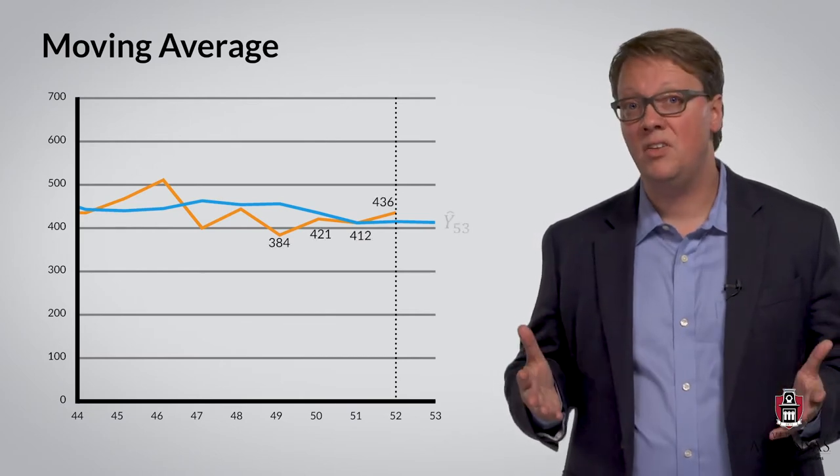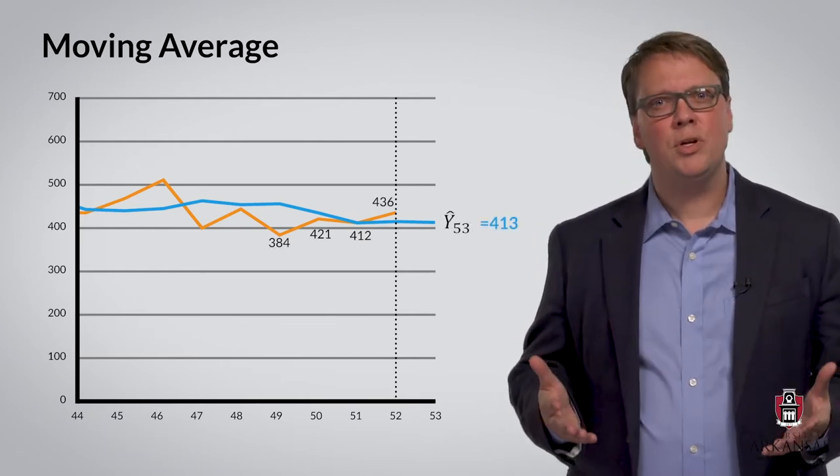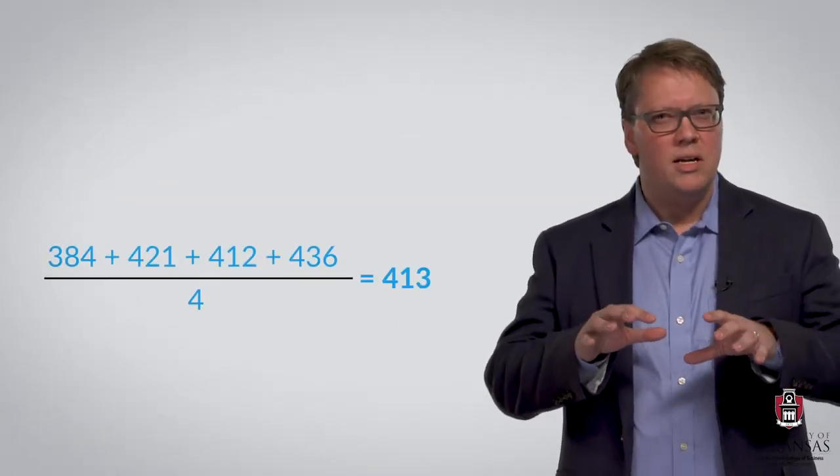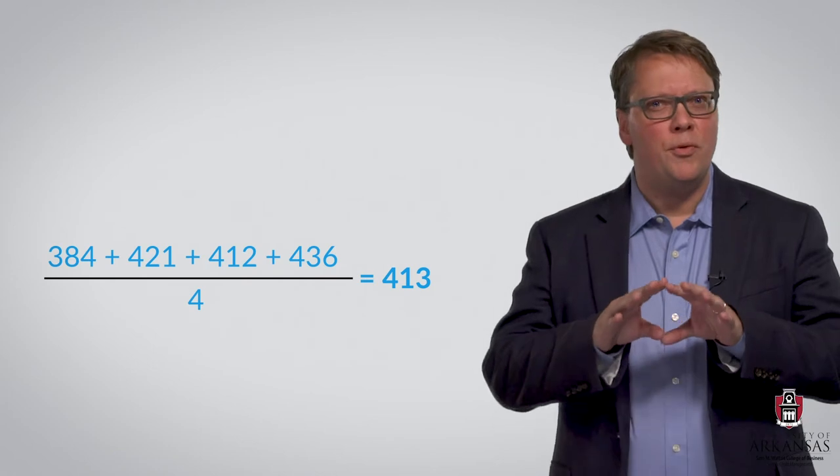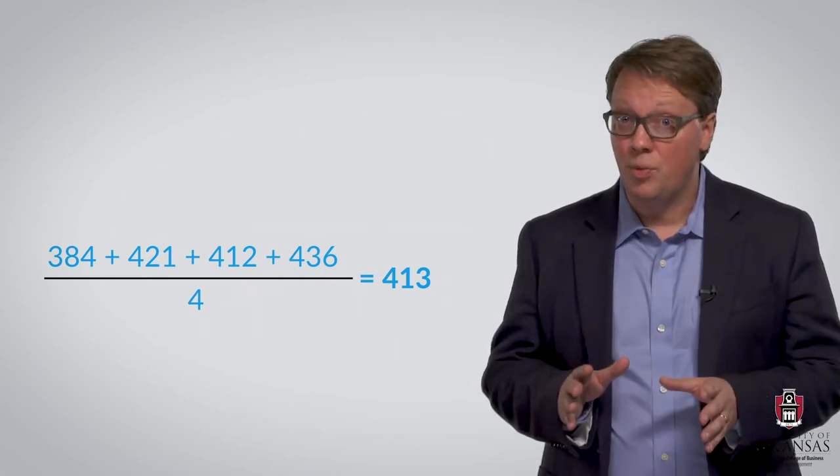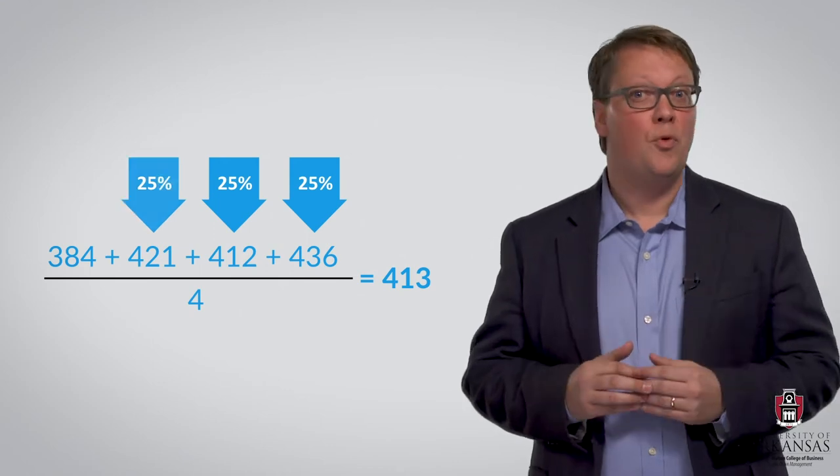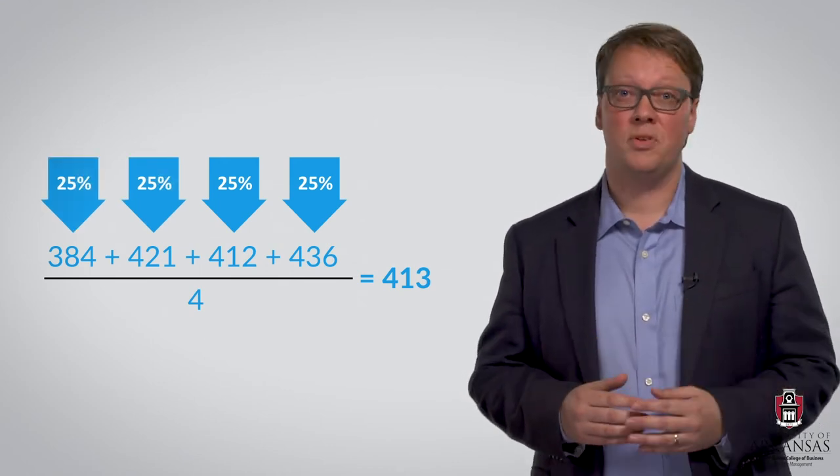In this case, y-hat 53 equals 413 units. To clarify, this means that we develop a forecast for period 53 by applying equal weights to each of the four most recent demand observations.